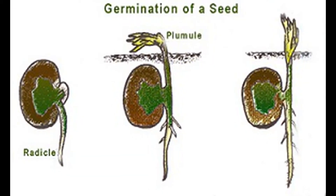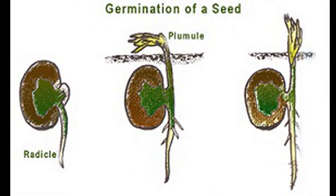After the seed coat ruptures, the radicle emerges to form a primary root. The seed starts absorbing water, and after the emerging of the radicle and the plumule, the shoot starts growing upwards.